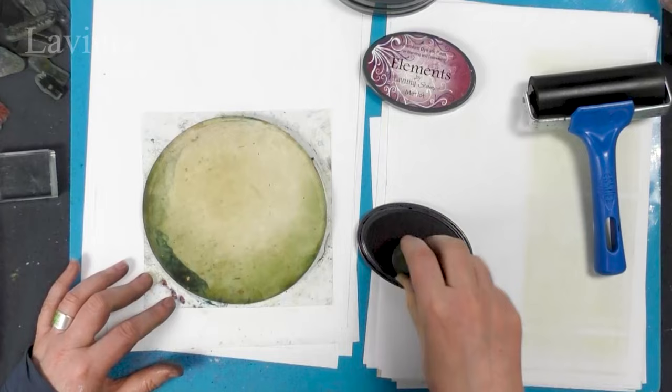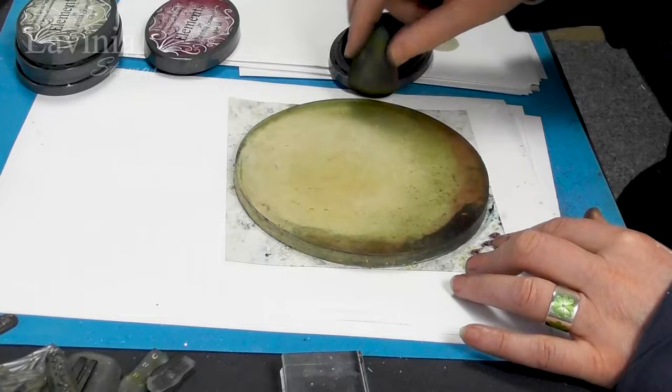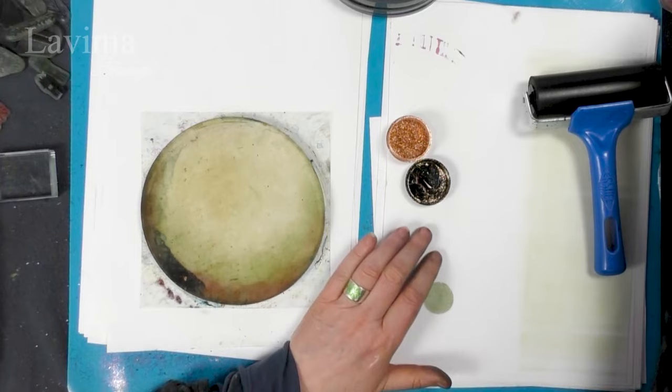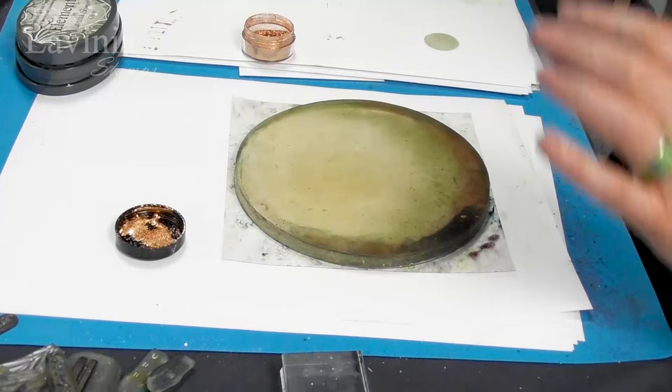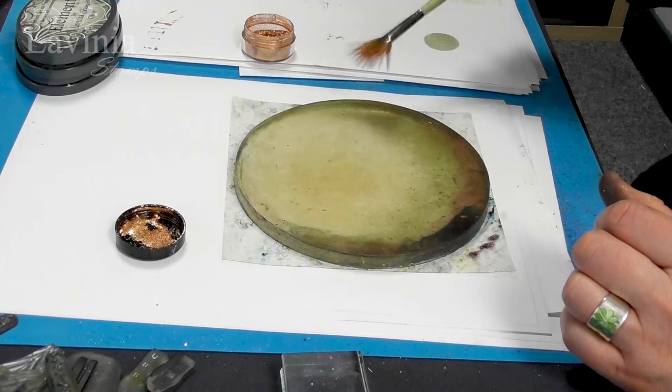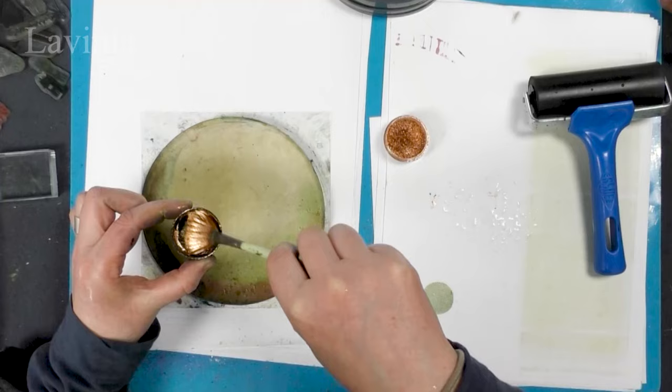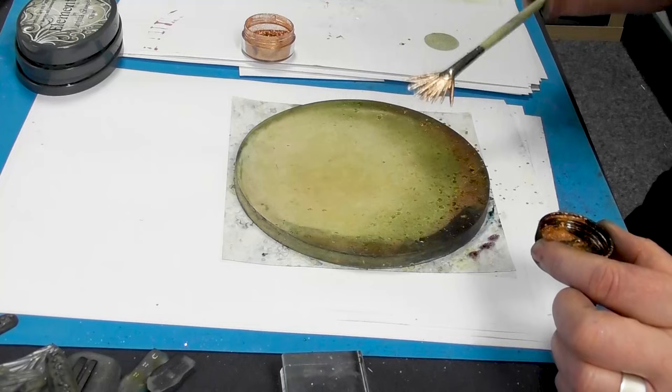And then some Merlot as well. So I've got the mica minerals metallic bronze here and I'm going to mix a little of this with some water. And then I've got my fan brush. First of all, I'm going to add a few speckles of water, and then I'm going to pick up some of those lovely mica minerals and just dot some of that over the top as well.